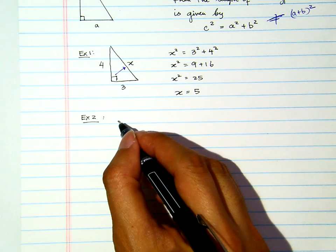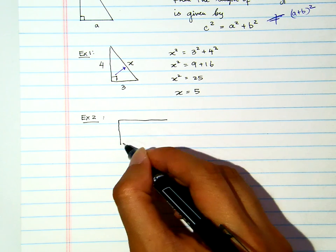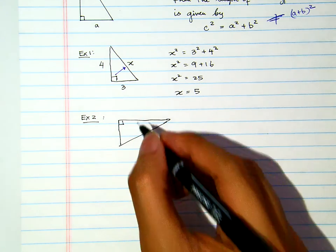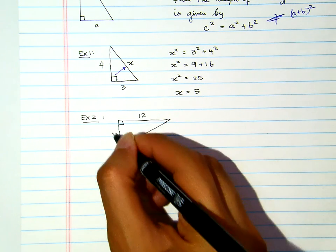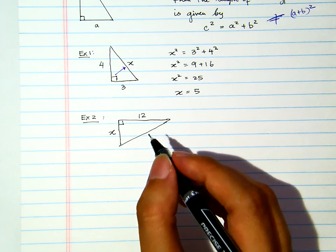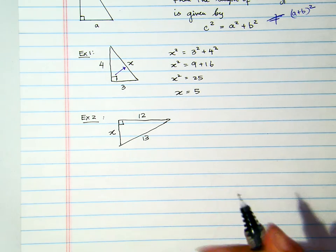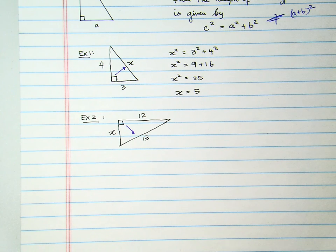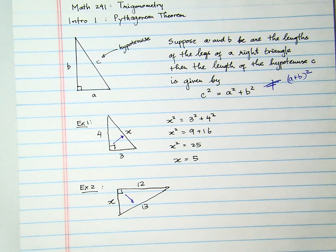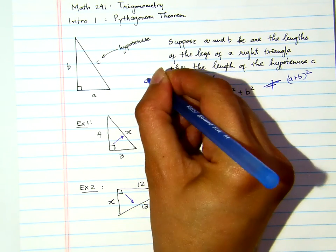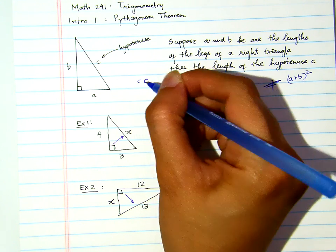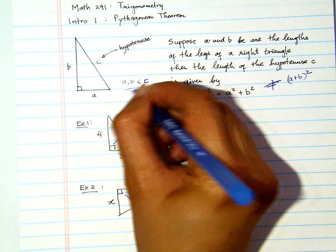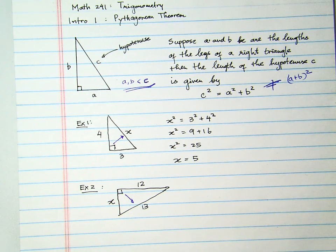Suppose I have a right triangle like this. Let's say the length of one of the leg is 12, the other one is unknown, and then the hypotenuse is 13. Notice that the hypotenuse is always longer than the other two. Let me write it up there. A little note that the C, the hypotenuse, has to be longer than A and B.